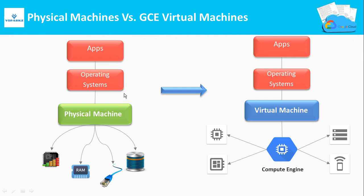Next, physical machines versus virtual machines. In physical machines, all your resources — CPU, RAM, network, and hard disks — are real, bare hardware. In the case of a virtual machine, all the resources behind it are virtual. This is the key difference between a physical machine and a virtual machine.